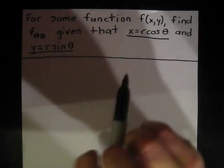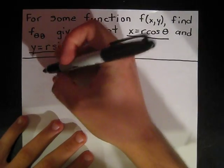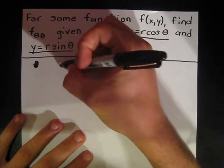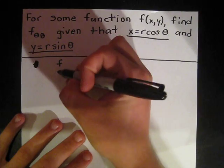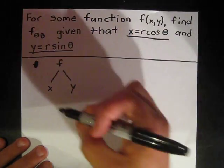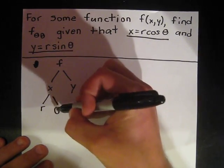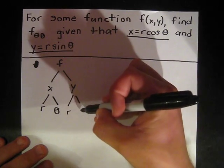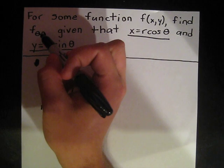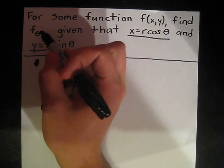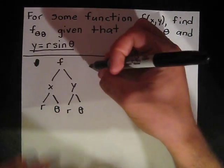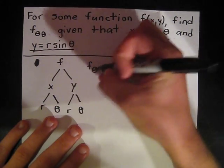The first way I like to get started with these sorts of problems is with a tree. We can recognize that f is a function of x and y, and x and y are both functions of r and theta. So if we're trying to find f sub theta theta, we first have to take the partial derivative with respect to theta once, and then once again. Let's start with the first partial derivative, f sub theta.